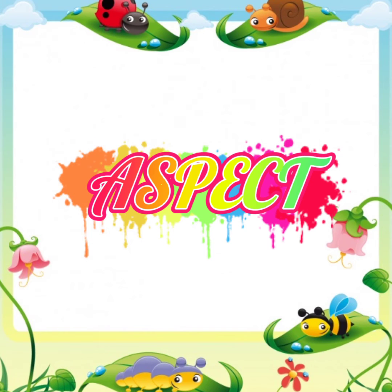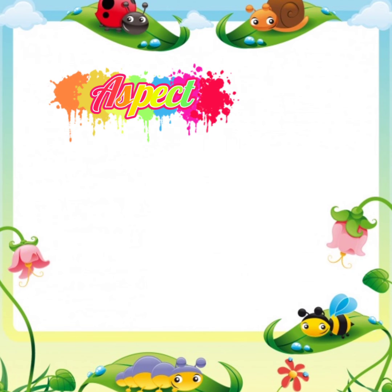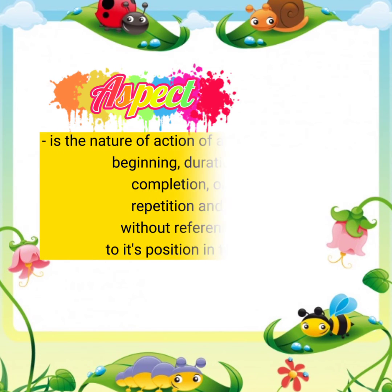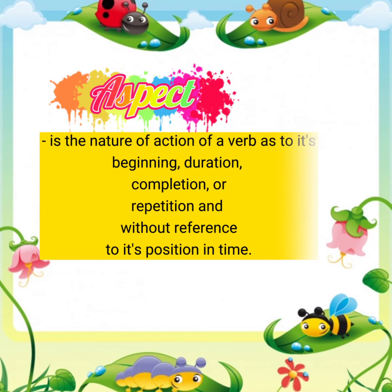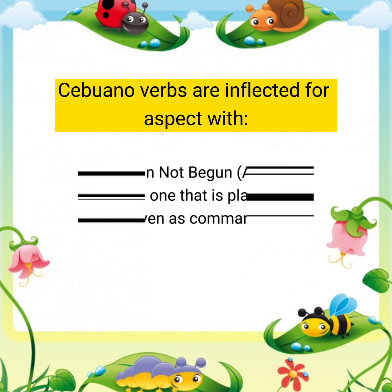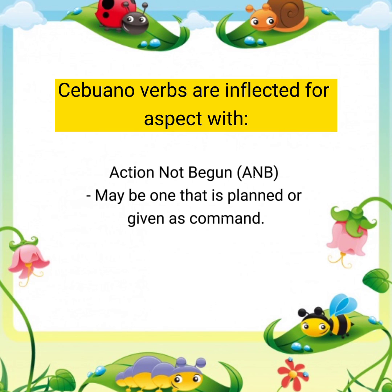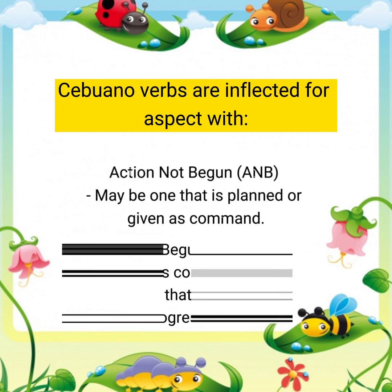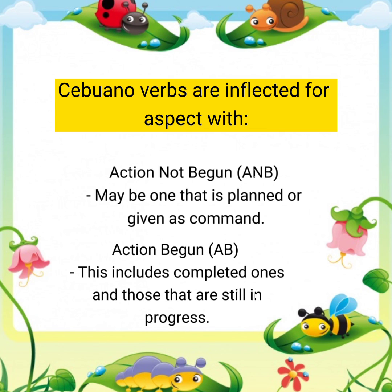The last component of a verb is aspect. Aspect refers to the nature of the action of a verb as to its beginning, duration, completion, or repetition, without reference to its position in time. Cebuano verbs are inflected for aspect, including: action not yet begun — planned or given as a command; and action begun — which includes completed actions and those still in progress.